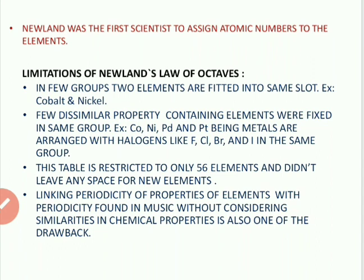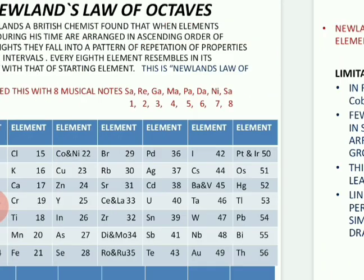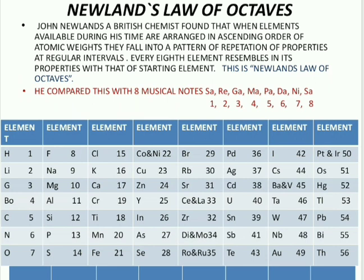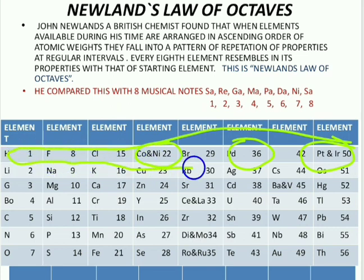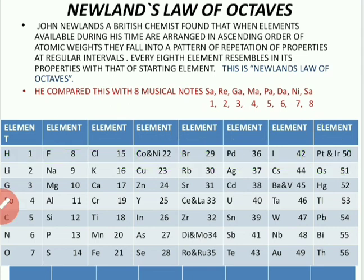Next, a few dissimilar elements — elements with dissimilar properties — were placed in the same group. For example, Cobalt, Nickel, Palladium, Platinum, and Iridium, which are actually metals, were placed in the same group as Fluorine, Chlorine, Bromine, and Iodine, which are not metals. These halogens are electronegative elements while the metals are electropositive — completely different in properties. In this way, this theory failed in arranging elements properly.